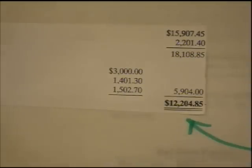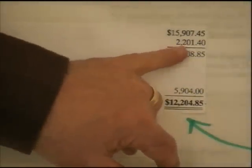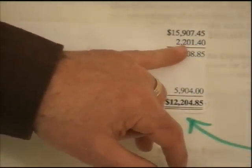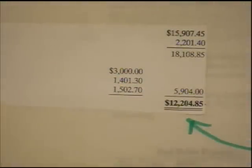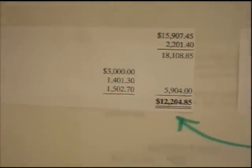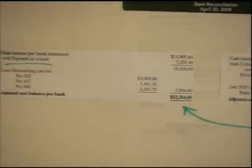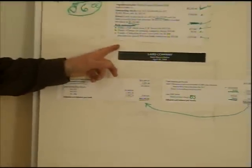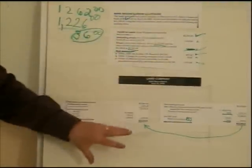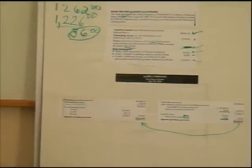The first number we'll add is what's called a deposit in transit, and here it is: 2,201.40. It will always be given to you in all the information. I have these check marks here so I don't miss a number. As I use these numbers from the information supplied, I'm going to check them off to know that I've used them all, and by the time I've used them all, hopefully all of this will be complete.